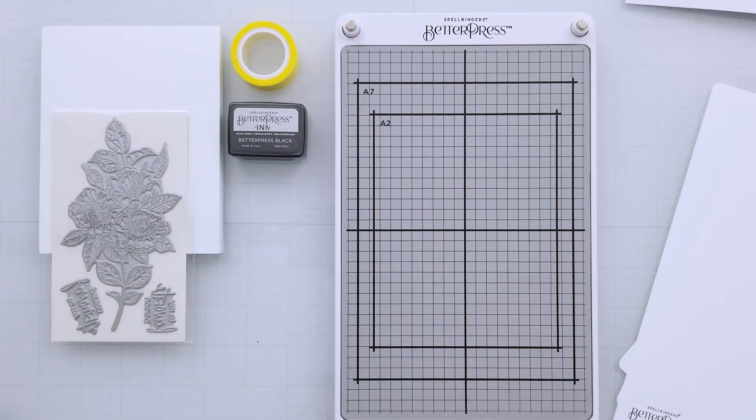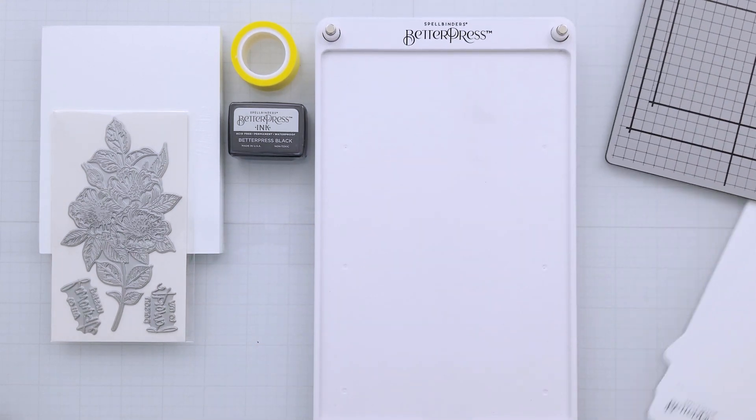This piece is called the platen and you just peel off the protective film, get rid of the cardboard. This is the chase and there's three Mylar shims and a magnetic insert. So the first thing you'll want to do is remove the magnetic insert and place those three Mylar shims underneath and then reassemble your chase.